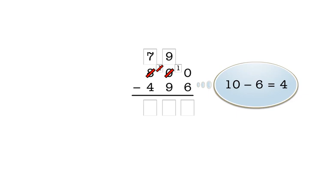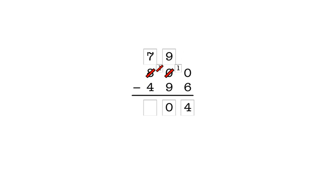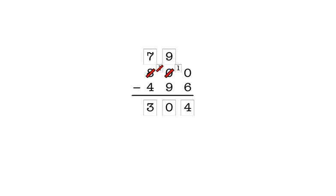So, we enter four in the answer box in the ones column. In the tens column, we have nine minus nine, which is zero. So, we enter zero in the answer box for the tens column. In the hundreds column, we have seven minus four, which is three. So, we enter three in the hundreds column answer box. Our final answer is three hundred four.